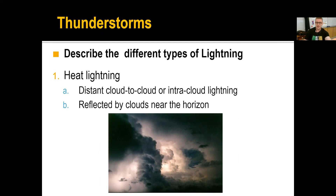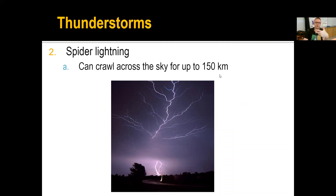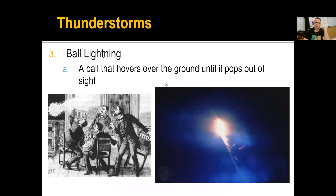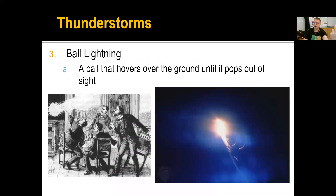What comes with thunderstorms? We have lightning, and there are different types. Heat lightning is cloud-to-cloud — it never really strikes toward the ground. You see this a lot during summertime evenings. Spider lightning is cool but dangerous because it can travel really far distances — up to 150 kilometers, which is roughly around 90 miles. Spider lightning can crawl across the sky far from where the thunderstorm is. Ball lightning is a very infrequent phenomenon where you can actually have a ball of electricity that hovers over the ground and rolls until it dissipates.